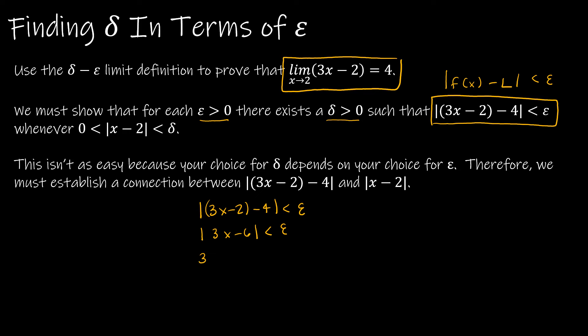Well, all I have to do is start with |(3x - 2) - 4| is less than epsilon. Just like I did on the last example, I'm just going to do some math inside that absolute value. So this is actually |3x - 6|. And then I can say that's |3(x - 2)|. So this helps because if you'll notice, the limit definition says I have to show that 0 is less than |x - 2| is less than delta for some delta, right? Based on what epsilon is.